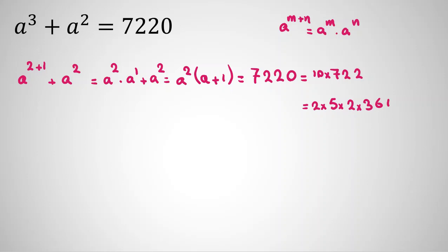Instead of 10 we can write 2 times 5, and 722 is 2 times 361. 361 is 19 squared. So this part, 2 times 2 times 5 is 20 times 361, which is 19 squared. So we can conclude by considering this part.